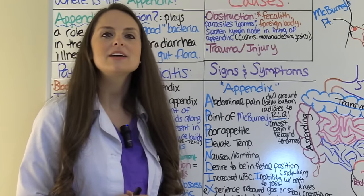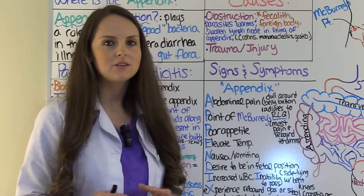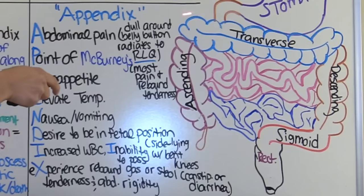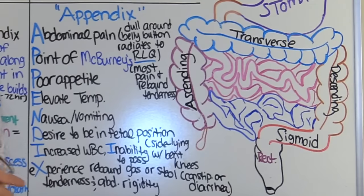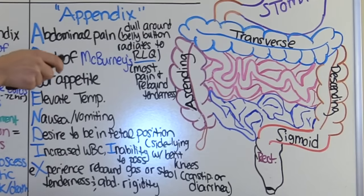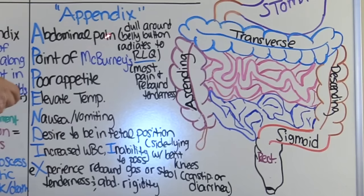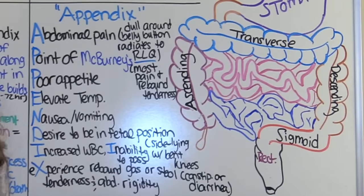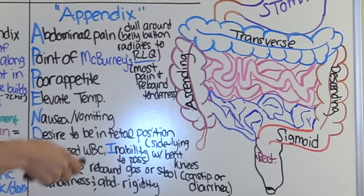Now let's look at the major signs and symptoms of appendicitis you need to know as the nurse. To help you remember them, use the word APPENDIX. A is for abdominal pain — your patient will definitely have this. It may start out as dull pain around the belly button, then radiate down to the right lower quadrant where it will localize. Remember, right lower quadrant, not the left.